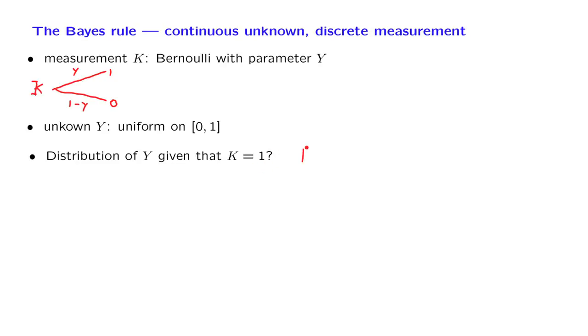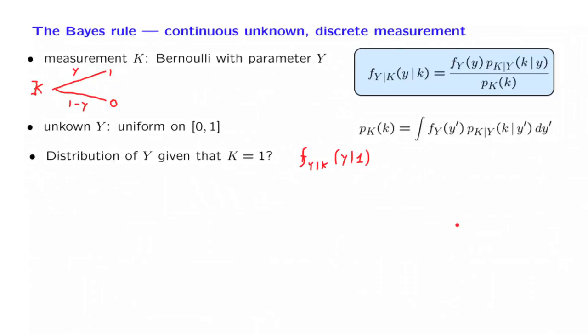So the question that we're asking is, what can we tell about the density of y, given that the value of 1 has been observed? The way to approach this problem is by using a version of the Bayes rule. We want to calculate this quantity for the special case where k is equal to 1.